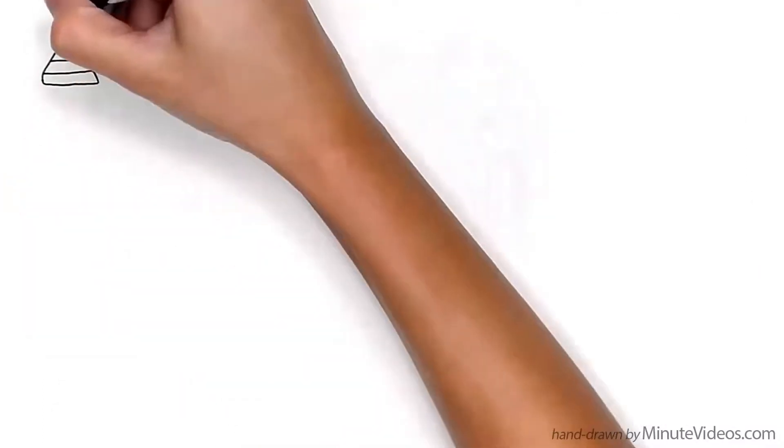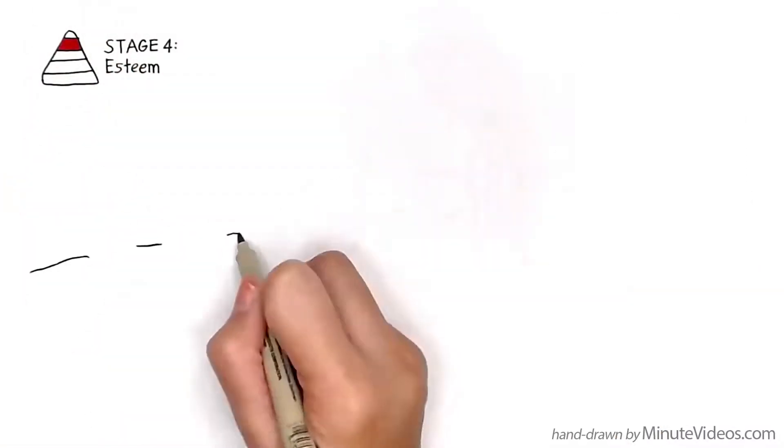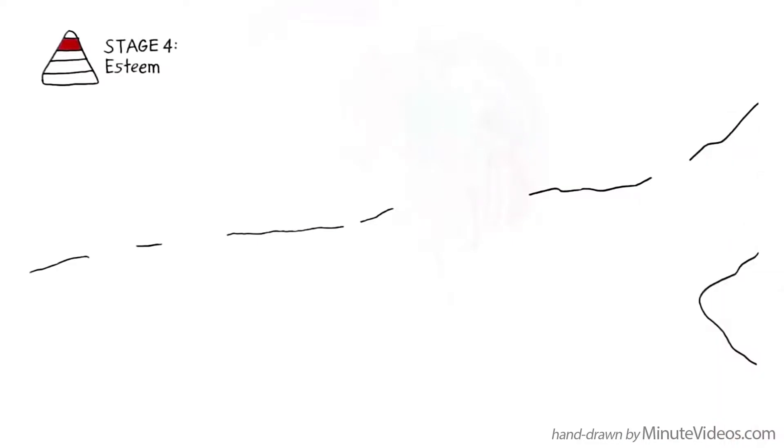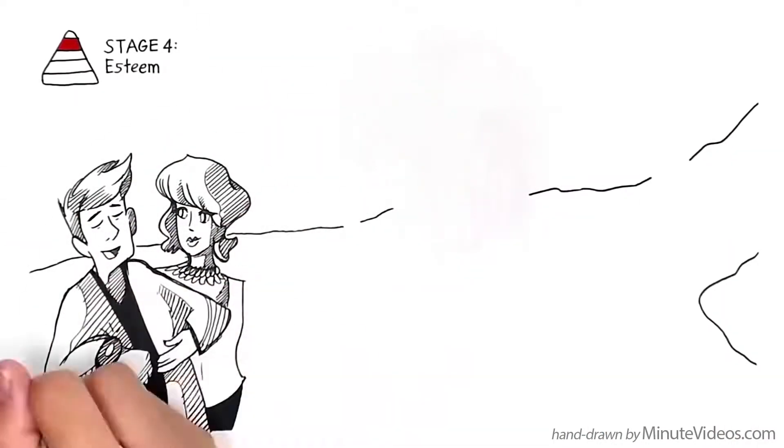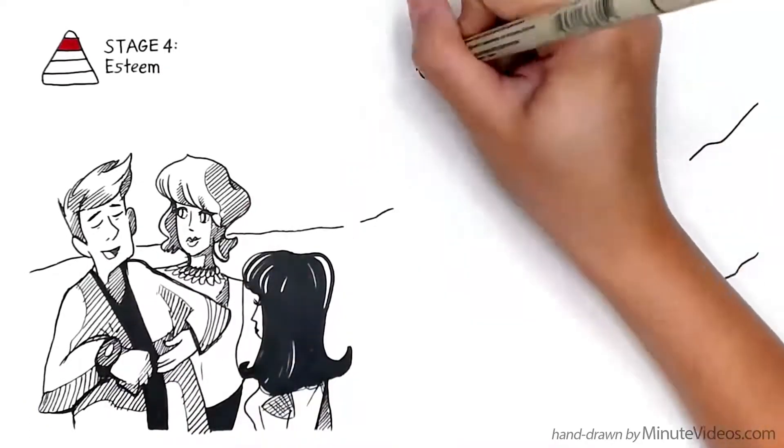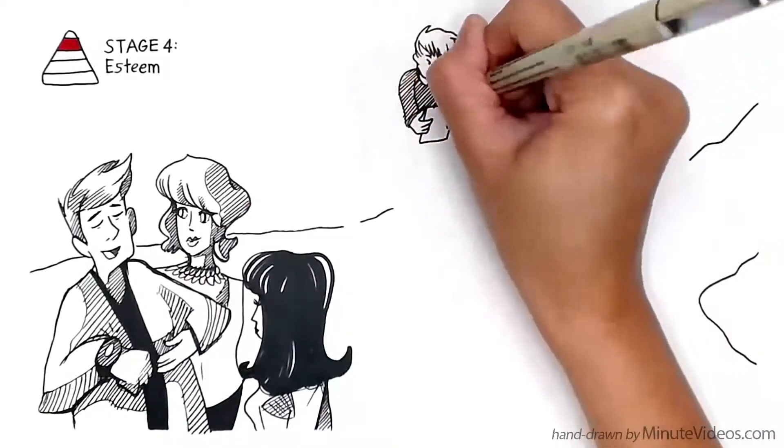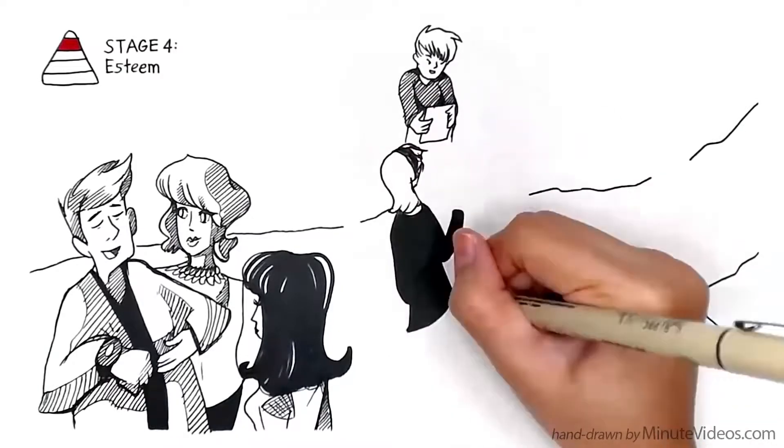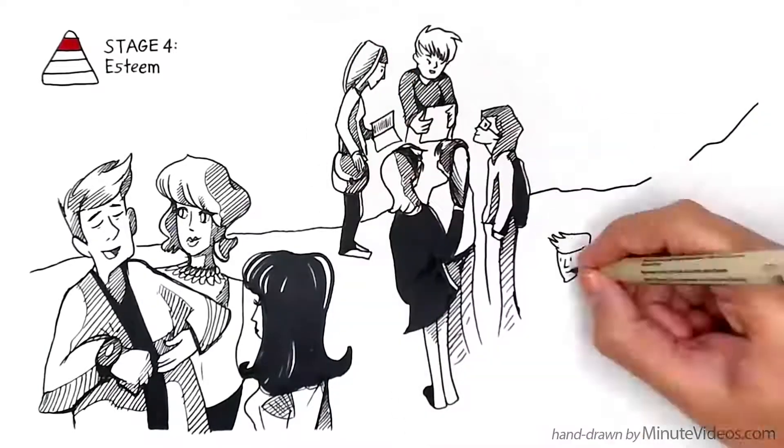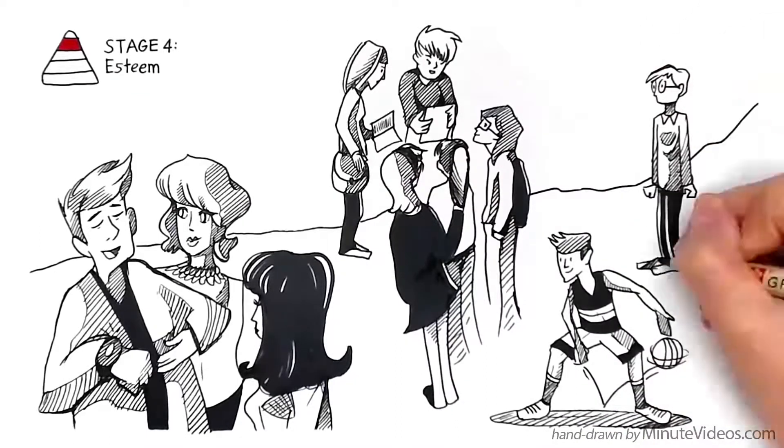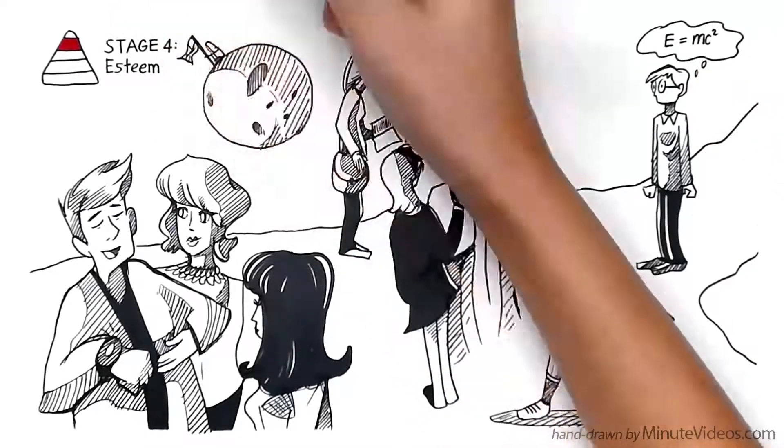At Stage 4, we look for esteem, self-confidence and respect from our peers. We want to be someone. If we have money, we buy a fancy watch. If we have a brain, we write or think or work a lot. Motivation to perform and compete is now at its highest. Students, sportsmen and inventors excel. Neil Armstrong even flew to the moon.